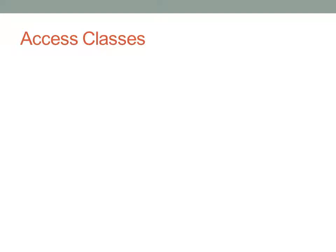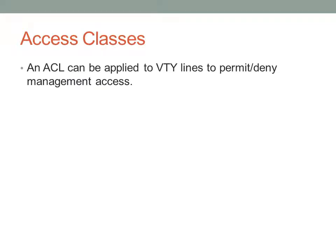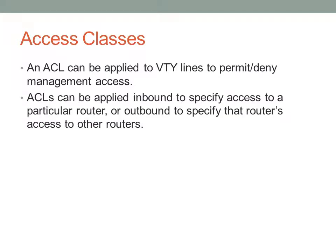Access class is very similar to access group, except access class is applied to VTY lines — so Telnet and SSH sessions. It can be applied inbound to specify who can connect to a particular router or switch, or outbound to specify whether a switch or router can initiate Telnet or SSH sessions to other devices. Under the VTY lines, you would specify 'access-class' followed by the access list number and then 'in' or 'out'.